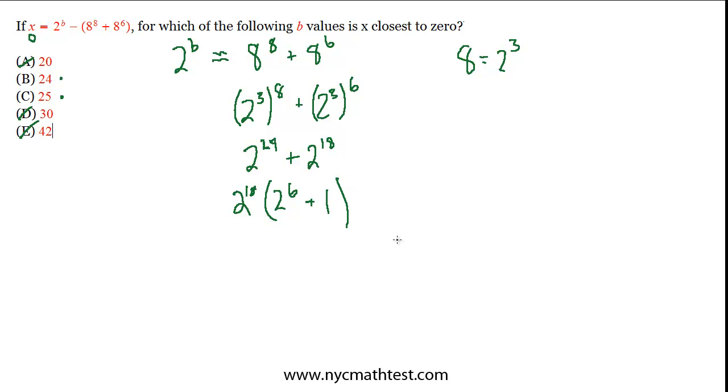So now if you think about it, what is 2 to the 6th? That's not too big to compute. We can actually figure out what that is. That is 64, right? 2 times 2 times 2, 6 times. Or you could do 2 cubed, which is 8, squared would be 64.